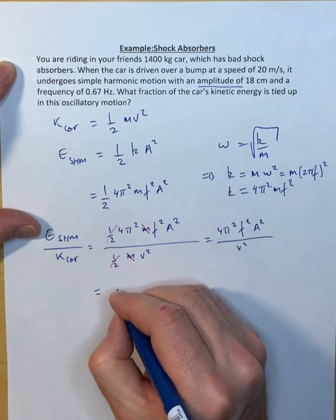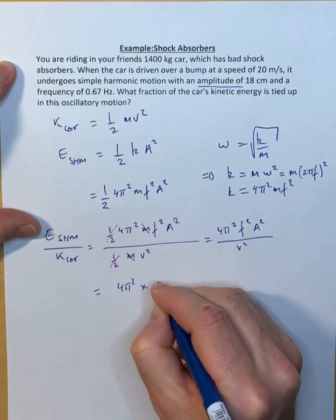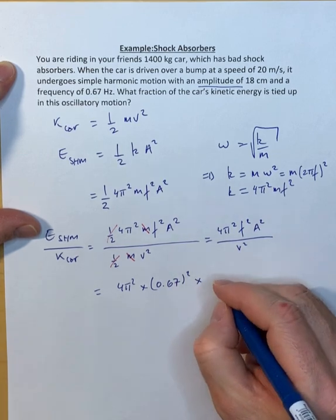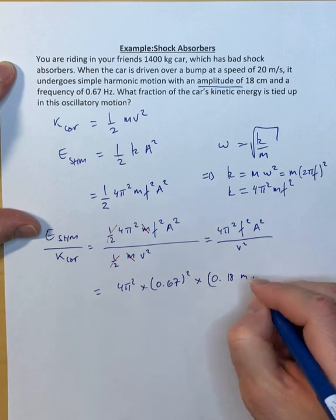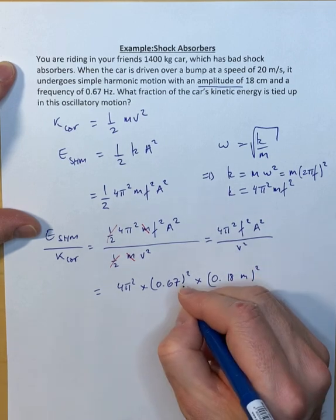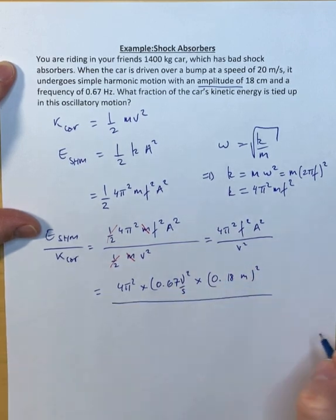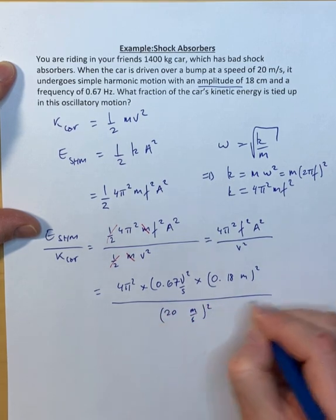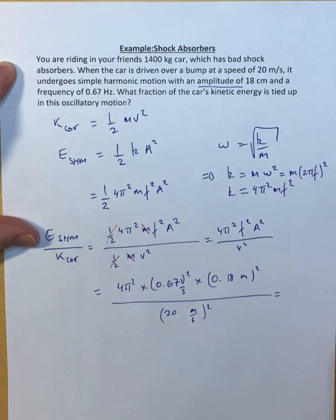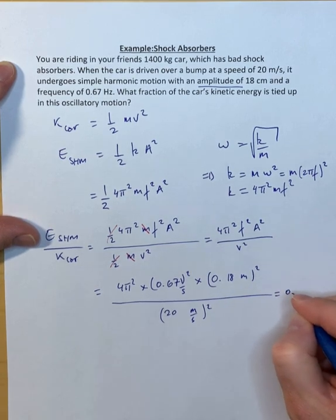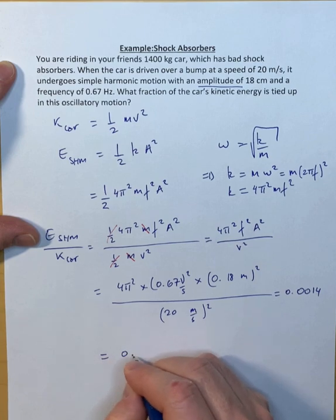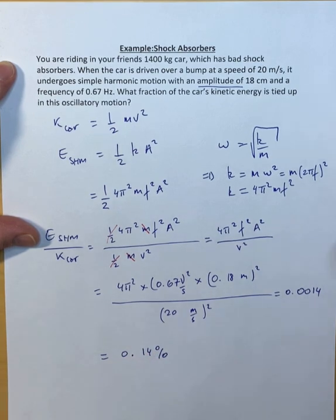Plug in the numbers. So it's 4 pi squared times 0.67 squared times the amplitude 0.18 meters squared, divided by 20 meters per second squared. That should then be 0.0014, which essentially is 0.14 percent.